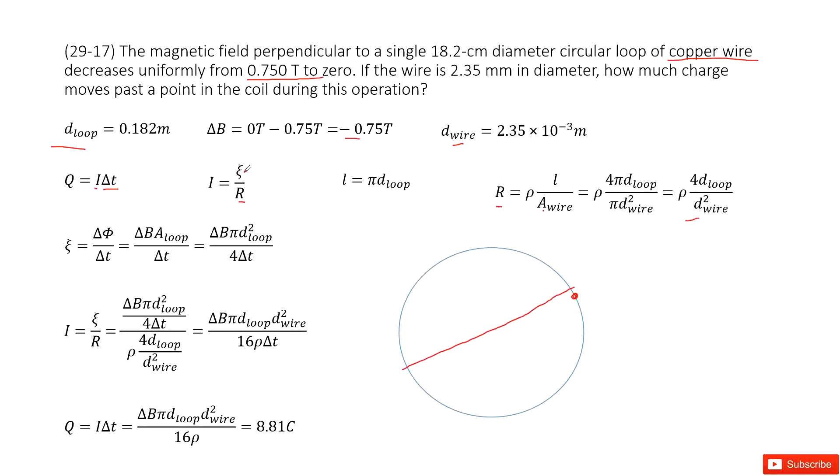How can you get the induced emf ε? That is change in magnetic flux divided by time. This change in magnetic flux comes from the change of magnetic field times the cross-sectional area for this loop.